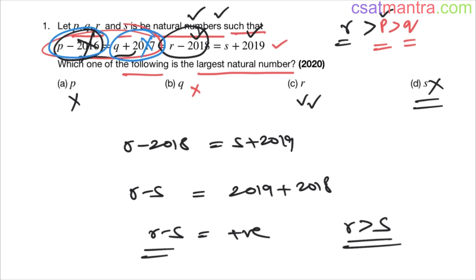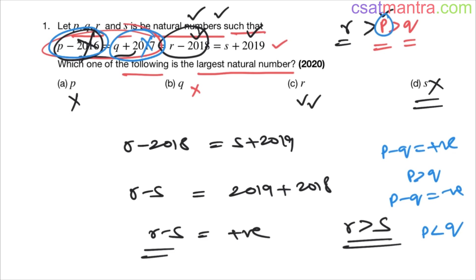So first you see which is greater between p and q. If p minus q is positive, then p is greater than q; if negative, then p is less than q. Once you know p is greater than q, you discard q. Then compare p and r — p is less than r. Now r and s are left; r is greater than s, so r is our answer.